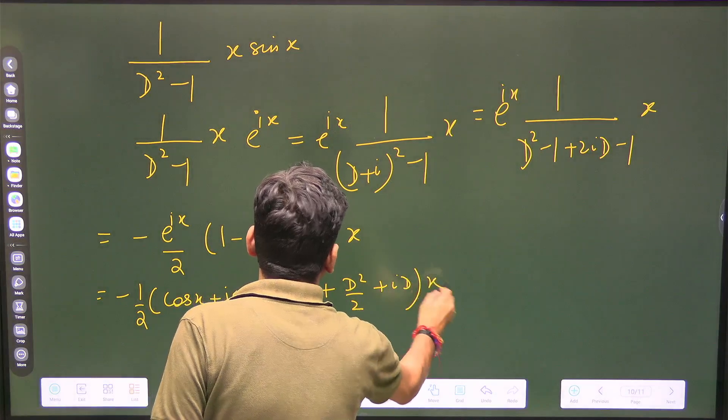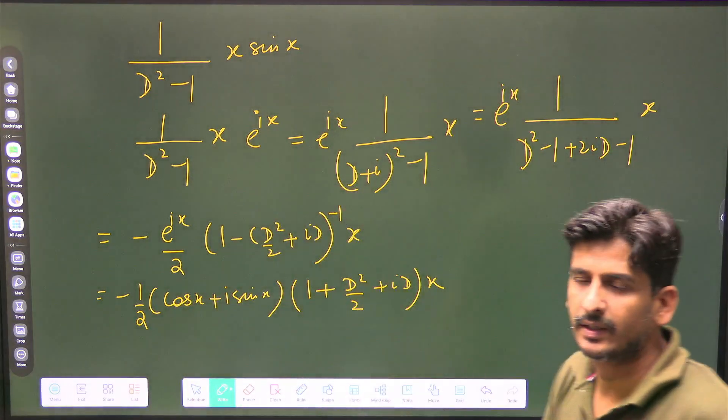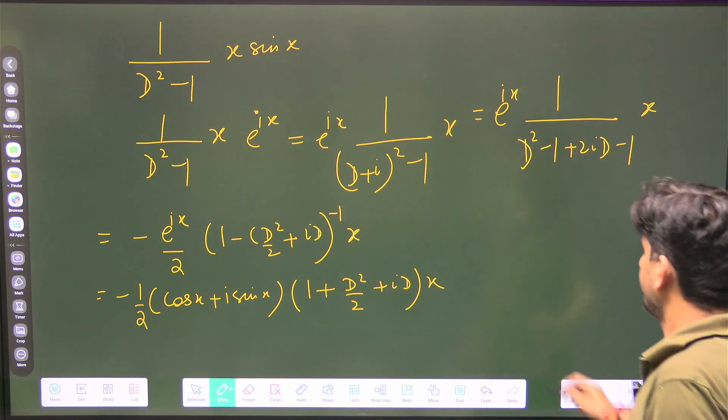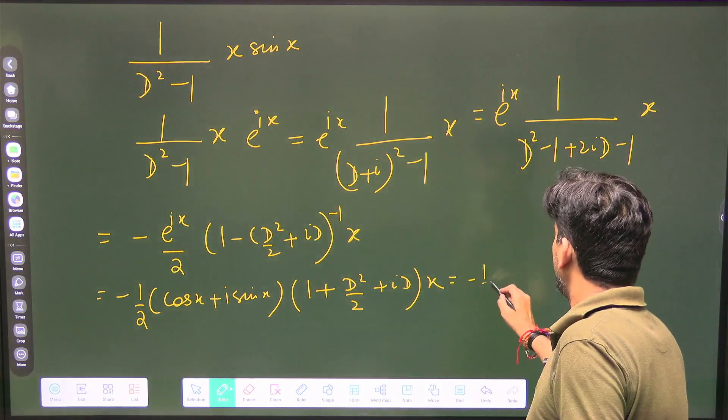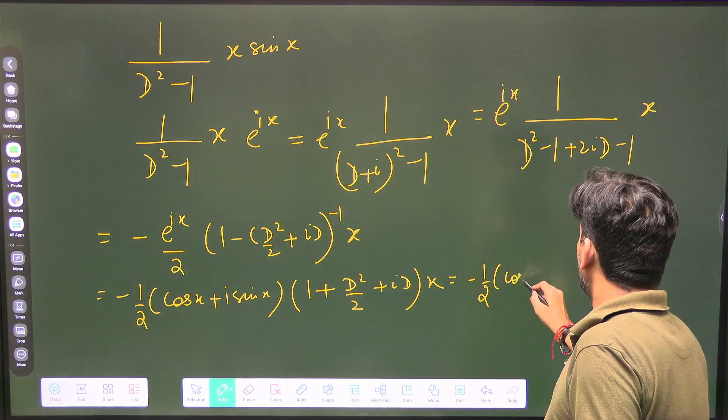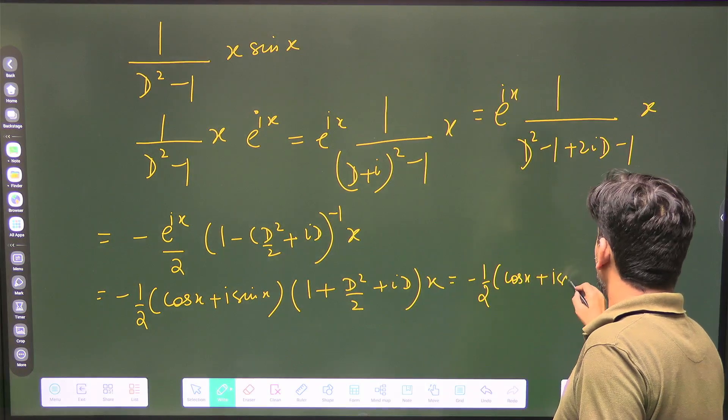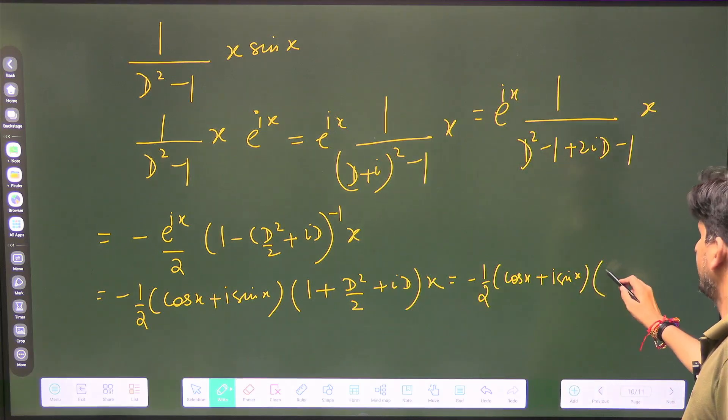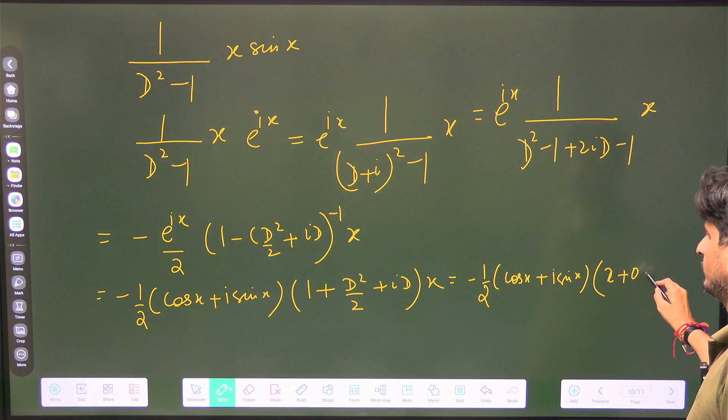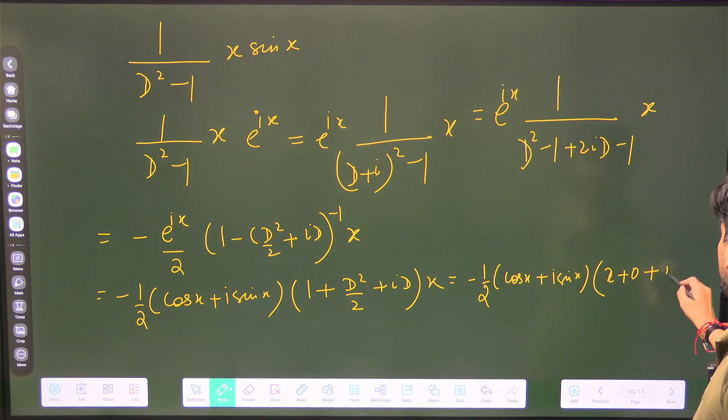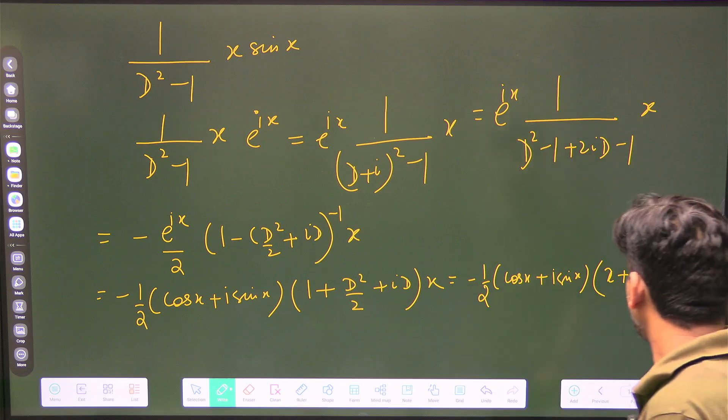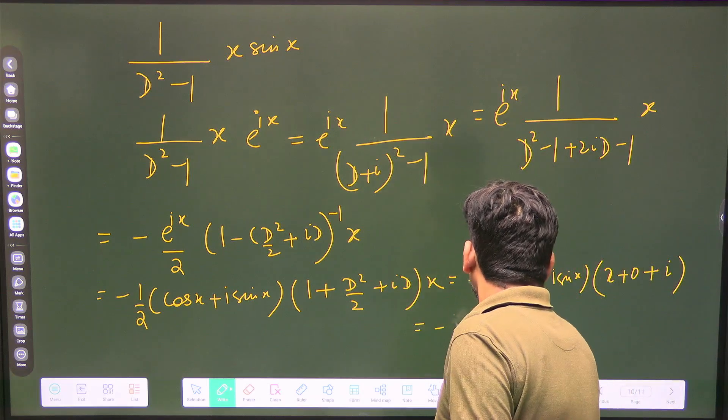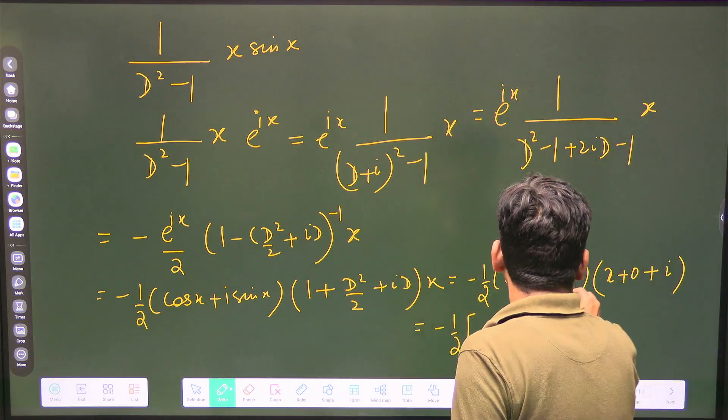I have not taken other terms because they will become 0, and it will become -1/2 (cos x + i sin x) - 1 will give you x, d² will give you 0, and id will give you i.